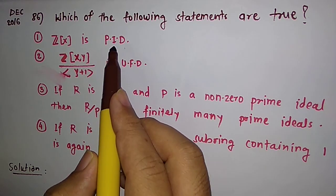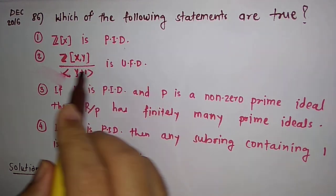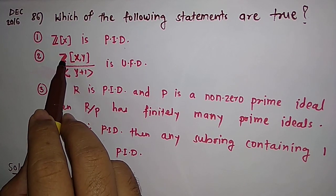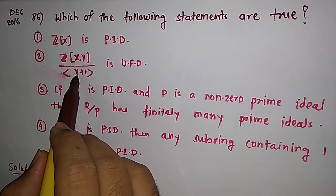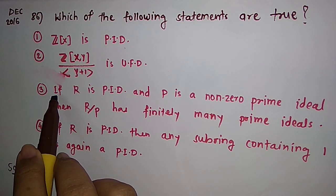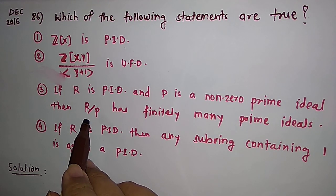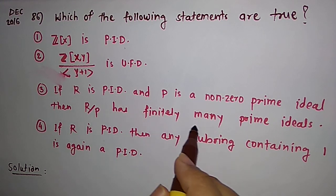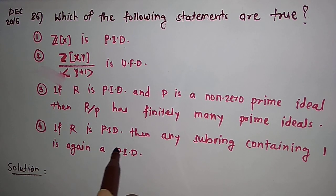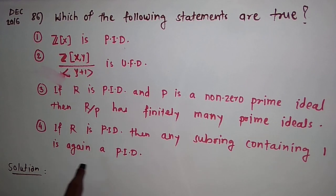The first statement is: Z[x] is a PID, which is a principal ideal domain. The second option is: Z[x,y] — polynomials in two variables with integer coefficients — modulo the ideal generated by y+1, is a UFD. The third option is: if R is a PID and P is a non-zero prime ideal, then R/P has finitely many prime ideals. The fourth option is: if R is a PID, then any subring containing unity (1) is again a PID.